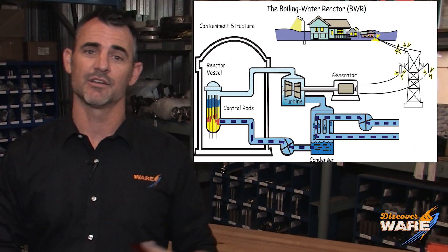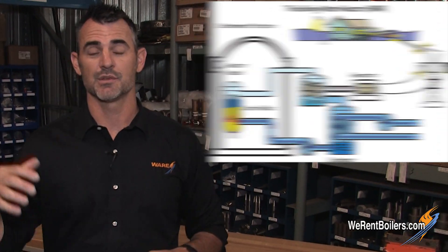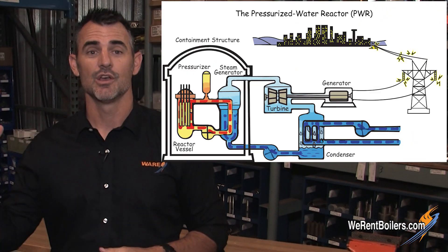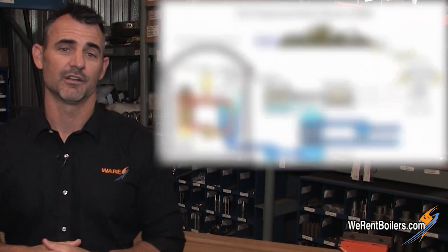There are two main kinds of reactors. One is a boiling water reactor and another is a pressurized water reactor. Essentially what that means is you're boiling water right in the reactor, or you're creating hot, hot pressurized water that doesn't boil and you send it over to a steam generator.